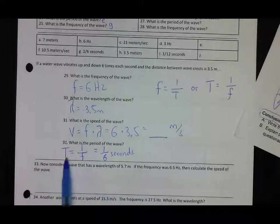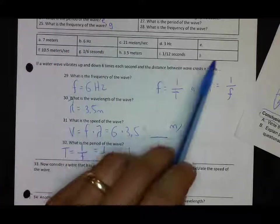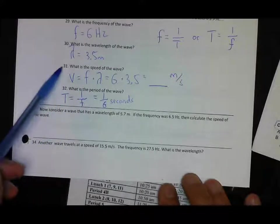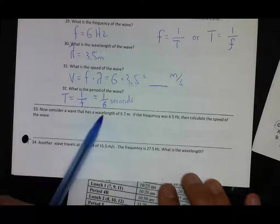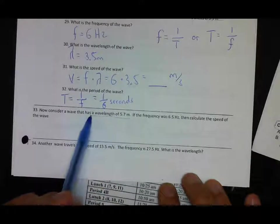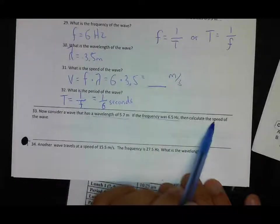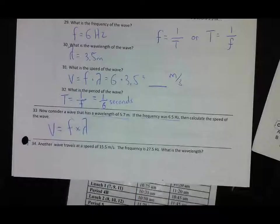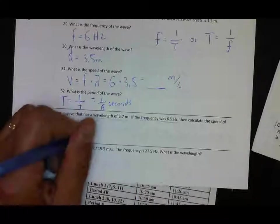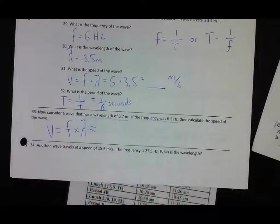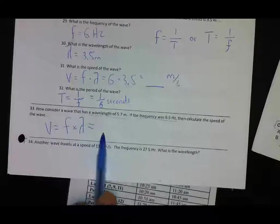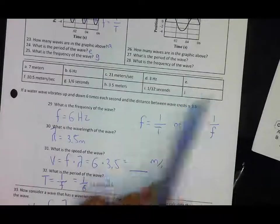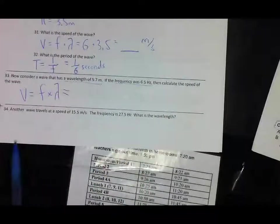Once you calculate those numbers for 29 through 32, you just pick your answer from up here. Let's go on to 33, very similar to 31. You consider a wave with a wavelength of 5.7 meters, frequency is 6.5. Calculate the speed. We're using the words speed and velocity interchangeably here, but we'll find out later that we'll distinguish between those two words. Your frequency is 6.5 hertz and your wavelength is 5.7, so you could just do that calculation. I forgot to put those options in there, but it's not a big deal, I'll fix that.